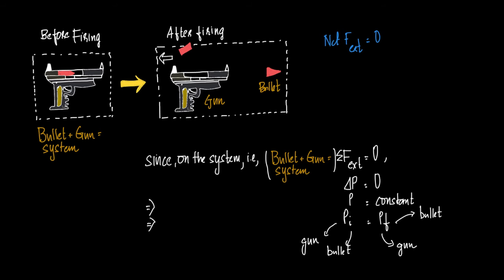No one from the outside is forcing this bullet. Yes, we are triggering the gun, but whatever caused this bullet to move is taking place due to the gun itself. So the bullet and the gun, when considered as a system, the total net external force acting on it is zero.